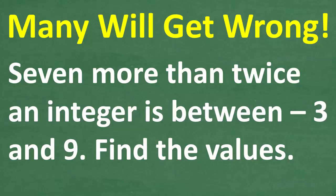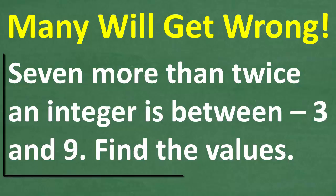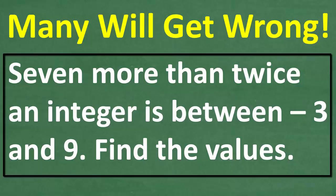But who knows? I think you are looking at this problem saying this is super easy. But let me go ahead and read the problem. It is the following: seven more than twice an integer is between negative three and nine. Find all possible values.